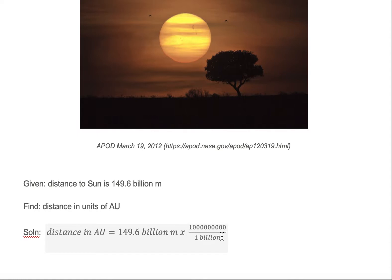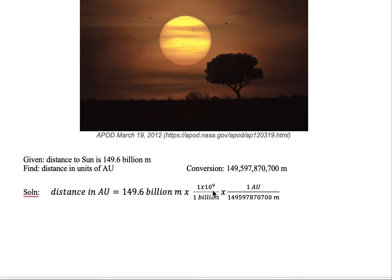There's 1 times 10 to the 9th in one billion, so we have our conversion. Next, we need to convert out of meters into astronomical units. I elected to write one billion as 1 times 10 to the 9th. So if I have billion on the bottom, this will cancel with the billion on top, and I'll be left with 10 to the 9th. Now I look up the conversion: 149,597,870,700 meters equals one astronomical unit.